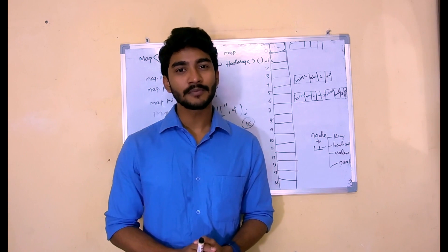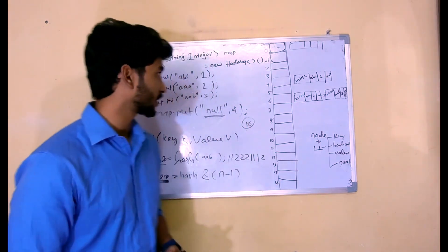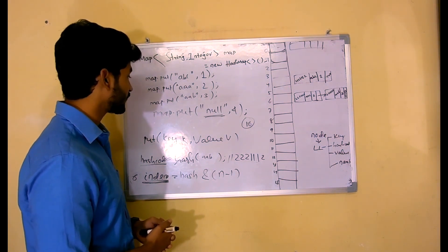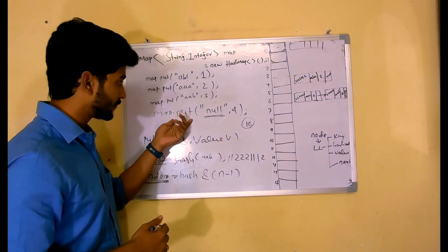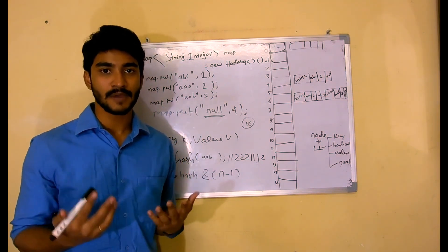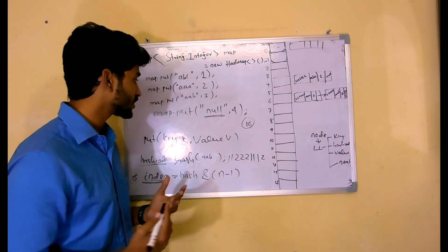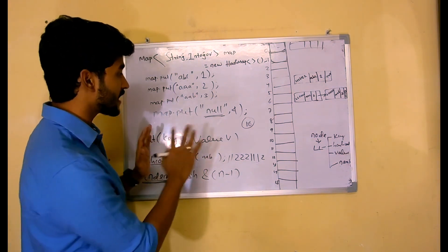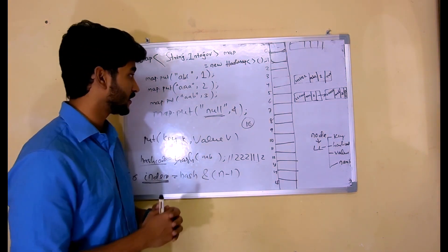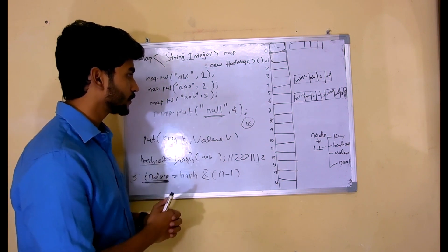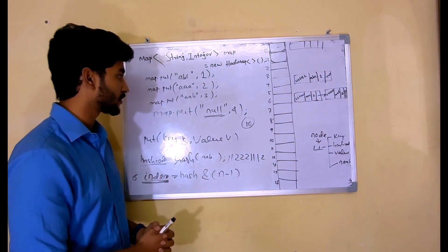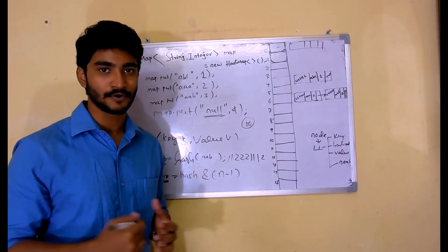Hi, in this tutorial, we're going to talk about how the GET method works in a map interface. So in the last tutorial, we had a discussion about the PUT method and how the internal structure of a HashMap works internally. Now let's talk about the GET method. I am going to use everything that I have drawn in the last tutorial. If you're here for the first time, don't forget to watch my previous tutorials. I'm going to resume this tutorial exactly where I paused last time.